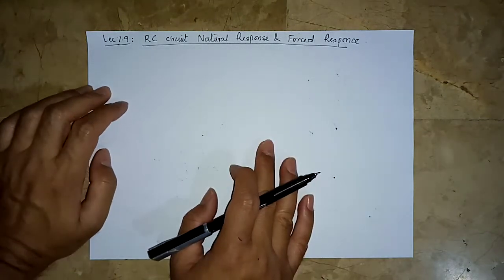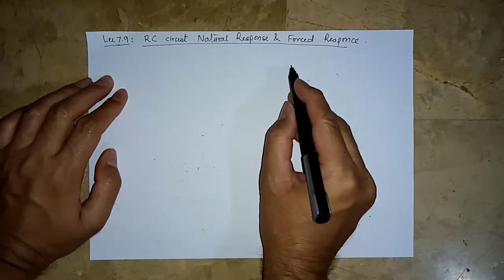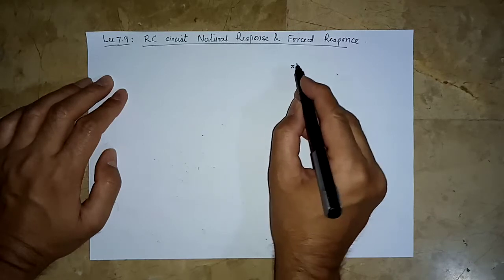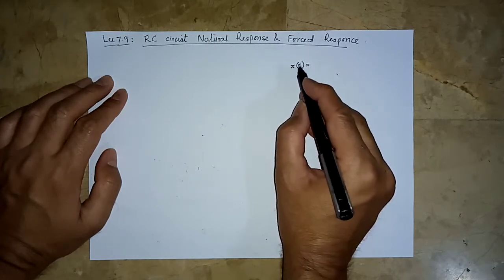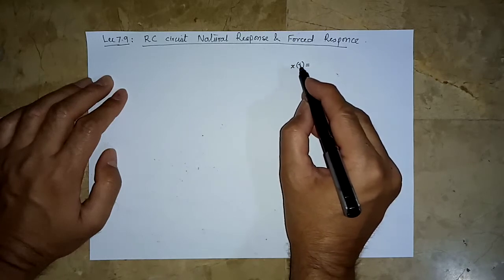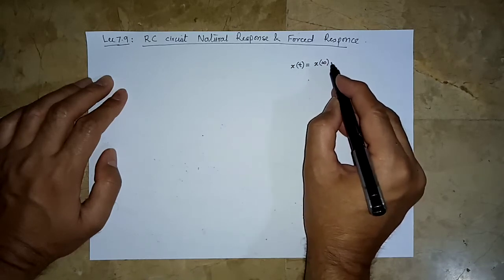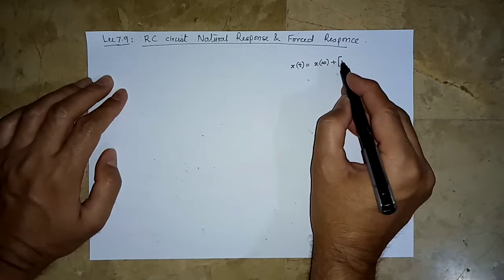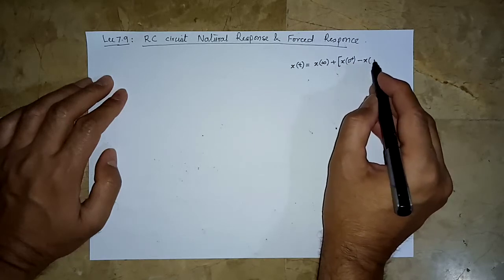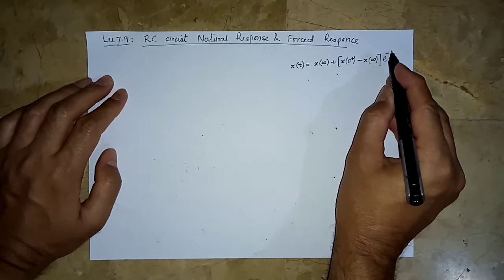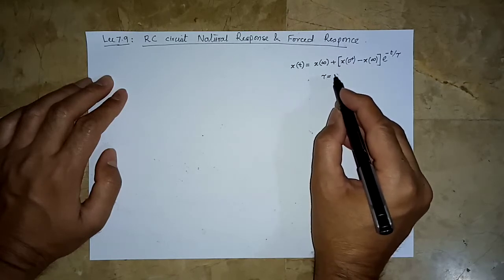Let us come to RC circuits now. We are going to use the general solution. Remember, in the general solution, if we wanted to find anything in the circuit — I'm now changing f to x, just to show that f is not important — the general expression is: x(t) equals the final value of x, plus the initial value minus its final value, times e raised to the power minus t over tau.